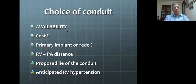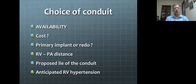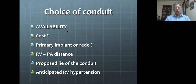It also depends upon whether it's a primary implant or a redo. If a patient is having replacement of a previously placed conduit and the earlier implant was a homograft, it is generally not wise to replace it with another homograft, because the patient may have developed antibodies to antigens present in the prior homograft, and the second homograft may degenerate more rapidly. So if the first conduit was a homograft, it's preferable to do the next replacement with a Dacron or Contegra conduit.